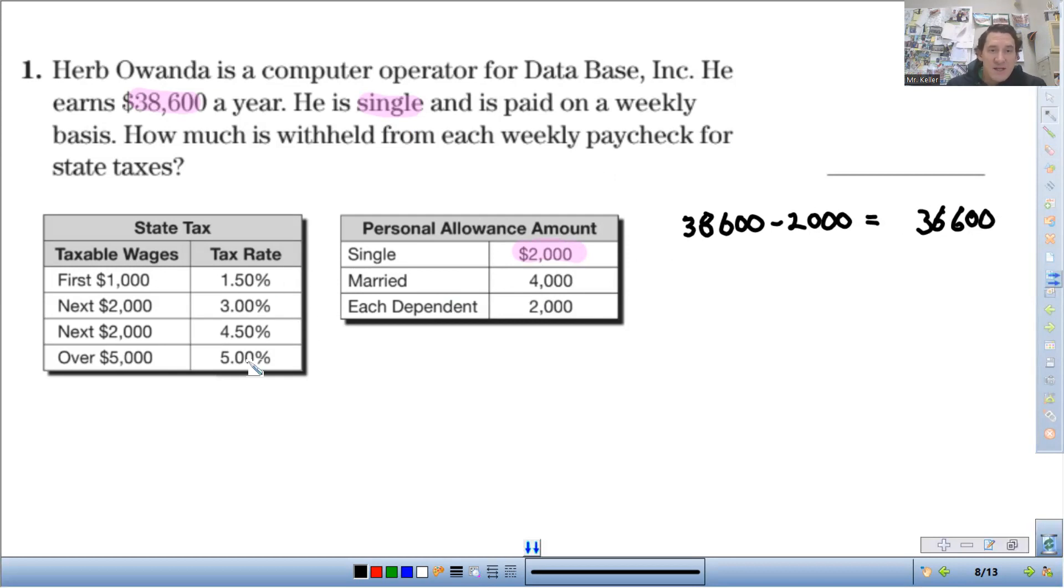So each of these things need to be changed into a decimal to work with. So I'll write that off to the side. 1.5% divide by 100, that's 0.015. This is 0.03, 0.045, and 0.05. Small percentages need to be in decimals to work with.